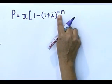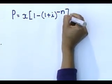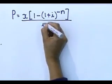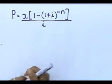That's the big difference in present and future value. In your future value, it is positive n. In the present value, it is negative n. Divided by i. There is your present value formula.